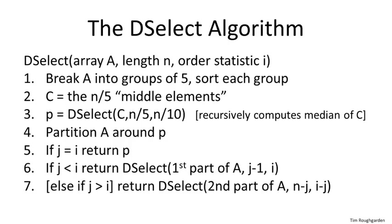First we do the first-round matches. We take array A and think of it as comprising groups of five elements: elements one through five, six through ten, eleven through fifteen, and so on. We sort each of those groups using, say, merge sort. Then the winner of each of these n/5 first-round matches is the median of those five — the third largest element out of the five.